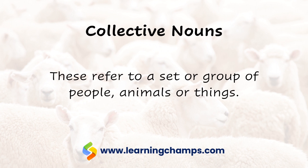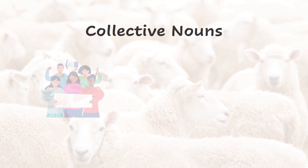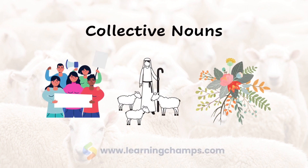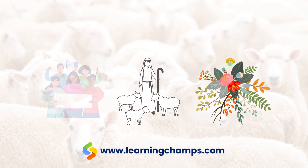Collective nouns refer to a set or group of people, animals or things. Examples: Group of girls, Team of players, Flock of sheep, Pile of books, Bunch of flowers, Fleet of ships and Flight of stairs.